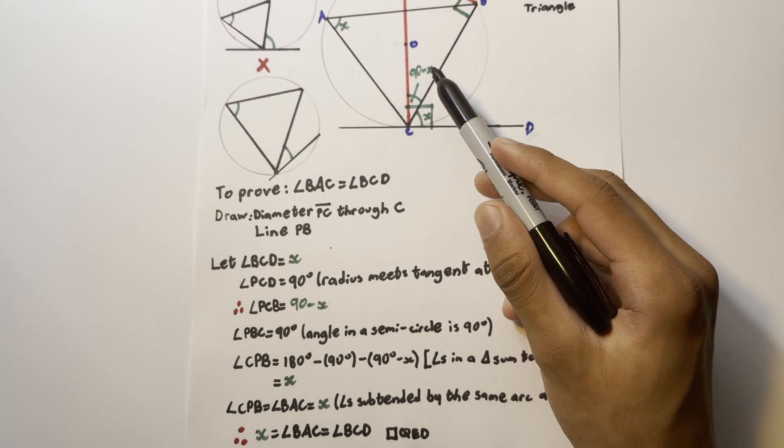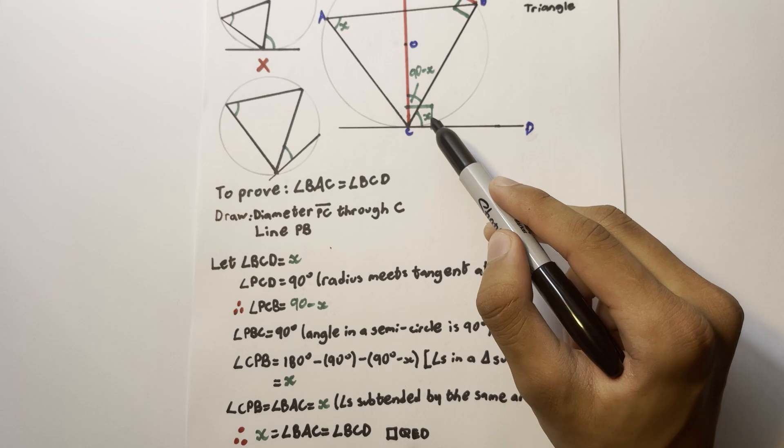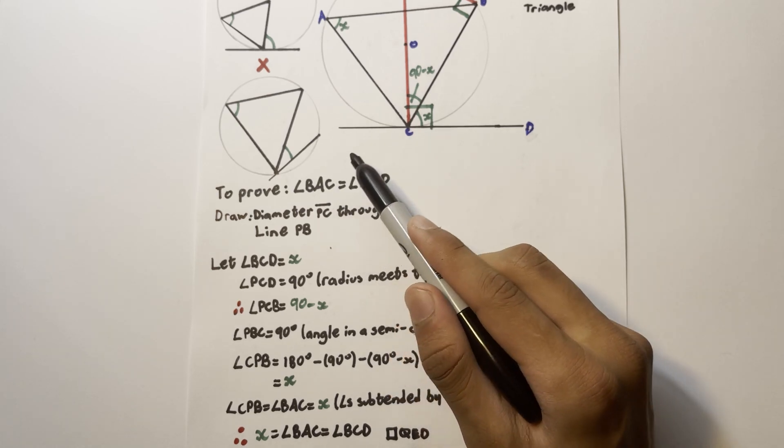As a result, we've proven that both angles BAC and angles BCD are equal to x, proving that they're equal like we originally sought to do at the start. Therefore, we've proved the alternate segment theorem.